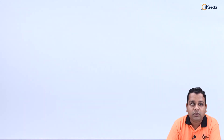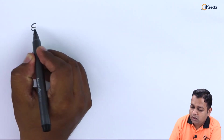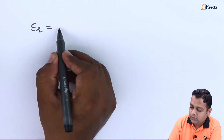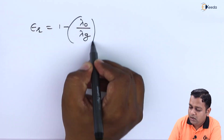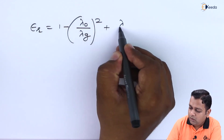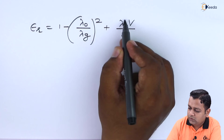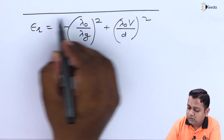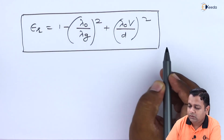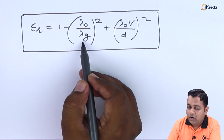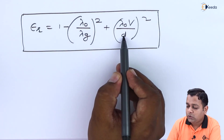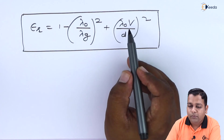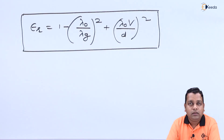From all these measured quantities, the dielectric constant epsilon_R is finally given as: epsilon_R = (1 − (lambda_0/lambda_g)²) + (lambda_0 × V / d)². This requires knowledge of the guide wavelength lambda_g, the free-space wavelength lambda_0, the thickness d of the dielectric material, and the quantity V determined from the earlier equation.